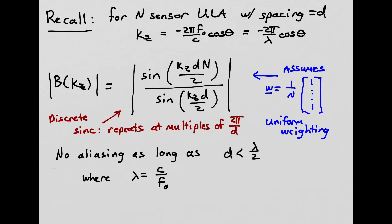The beam pattern magnitude we derived equals sine(KZ·D·N/2) over sine(KZ·D/2), which is a discrete sinc function. It repeats at multiples of 2π/D, the spatial sampling frequency. This expression assumes uniform weighting so all sensors are weighted equally, with the weight vector normalized by 1/N to guarantee unity gain. The spatial sampling rules say we won't have aliasing as long as D is less than half the wavelength — that is, D < λ/2.